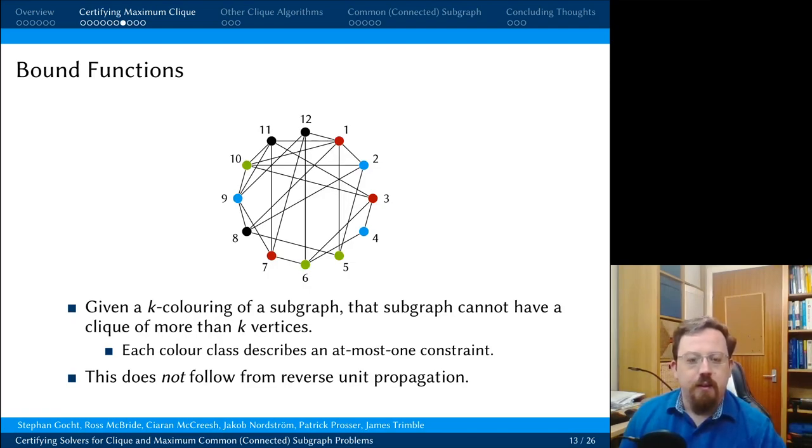But what about bound functions? So, let's suppose I can colour a subgraph using k colours. So each vertex gets a colour, I use k different colours, and any two vertices in the same colour class cannot be adjacent. In effect, each colour class here is describing an at most one constraint. So if I can use k colours for a subgraph, then I cannot have a clique of more than k vertices in that subgraph. Now, unfortunately, these at most one constraints do not fall from reverse unit propagation.